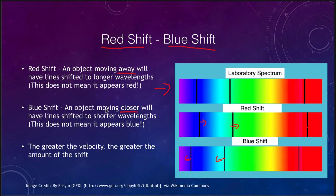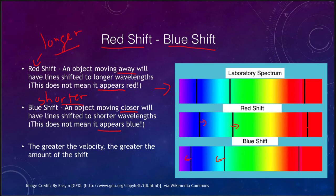When we talk about a red shift or a blue shift, it does not mean that the object appears that color. It only means that the lines are shifted towards longer wavelengths for a red shift, or shorter wavelengths for a blue shift. A red shift means the object is moving away, and a blue shift means it's moving towards you. The amount of the shift tells you how great the velocity is — a very small shift means a small velocity and a very large shift means a very large velocity.